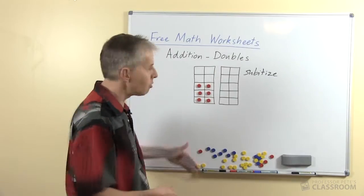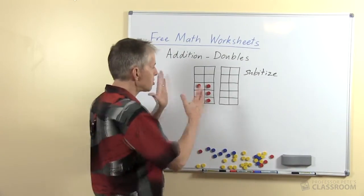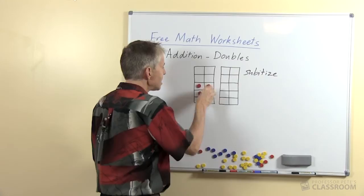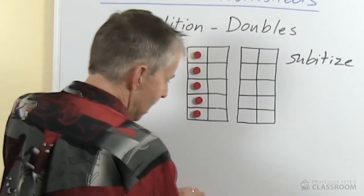So there's a number less than 10 or up to 10 we can quite easily show with a single 10 frame. Let's see what happens if we go beyond the 10.